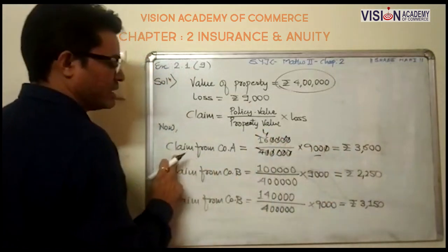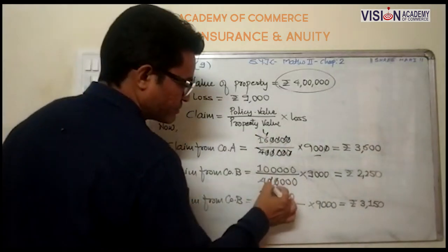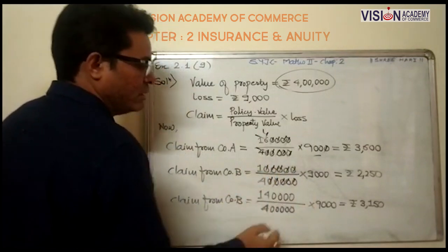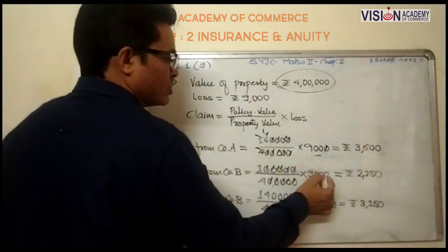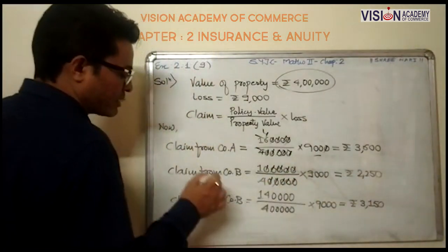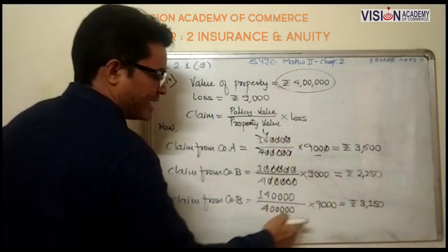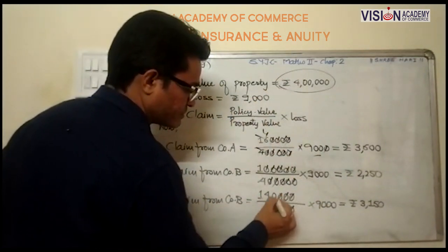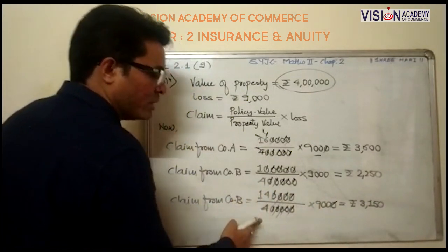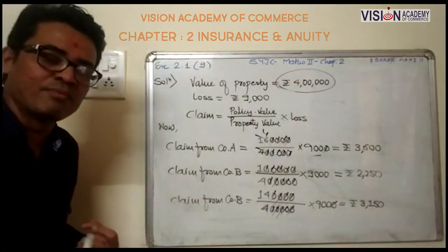Claim from company B: policy value 1 lakh, property value 4 lakhs, loss 9,000. So 9,000 divided by 4 is rupees 2,250. Claim from company C: policy value 1 lakh 40 thousand, property value 4 lakhs, loss 9,000. Calculation gives rupees 3,150.